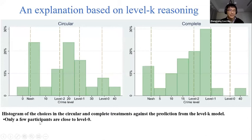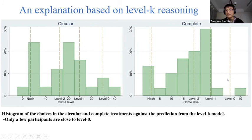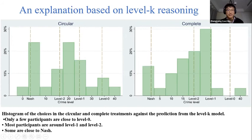We briefly show a histogram of crime levels in circular and complete networks against the level-K model predictions, shown as dotted lines. We find very few participants are close to level zero; most are between level one and level two, and some are close to Nash equilibrium. This is consistent with common findings in the level-K literature without network structure.